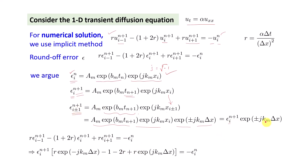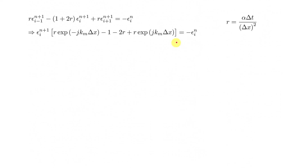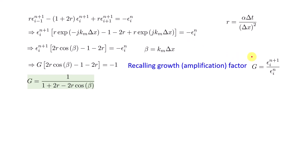For the i+1 term we have exp(+j·k_m·Δx), and the right-hand side is left unchanged. Now we need to find the growth factor g = ε_i^{n+1} / ε_i^n. We combine exp(-j·k_m·Δx) and exp(+j·k_m·Δx) together, which gives 2·cos(β) where β = k_m·Δx. After dividing through by ε_i^n we obtain g.